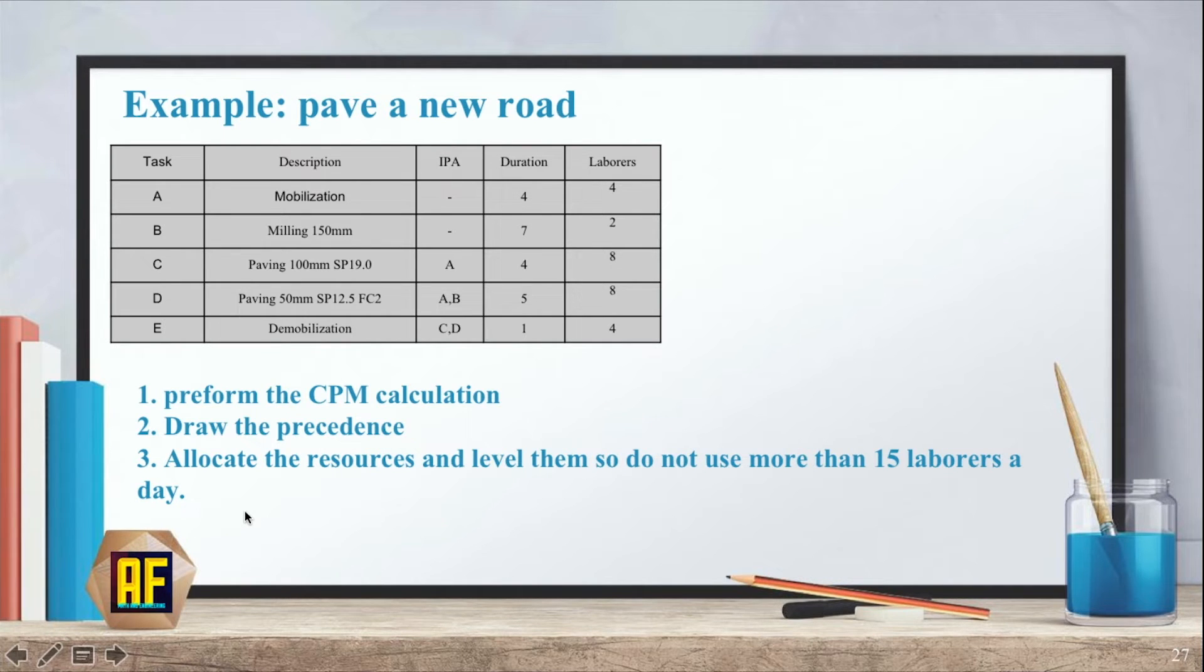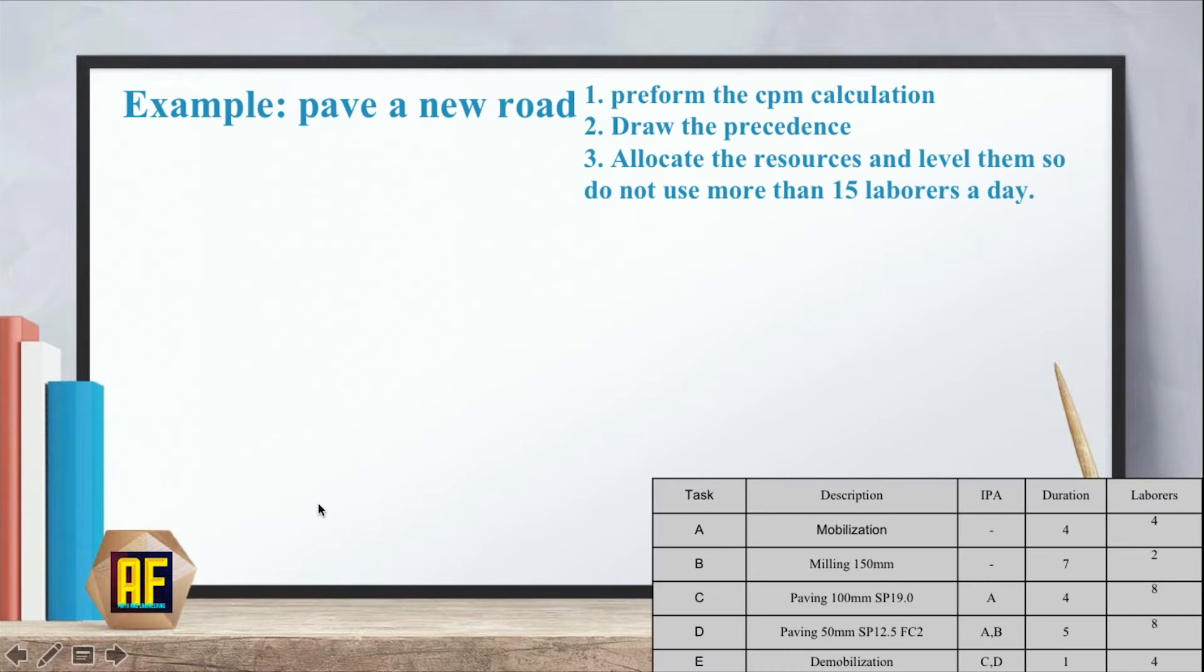It's saying allocate the resources and level them so we do not use more than 15 labors a day. And this could be a financial term or this could be a condition or sometimes the union doesn't let us use more than a number of employees for each day. So this is something that I could say is a valid condition that can happen. Or maybe it's a small company and we have only 15 labors to assign to that specific task. But this is our condition for the question. So let's start.